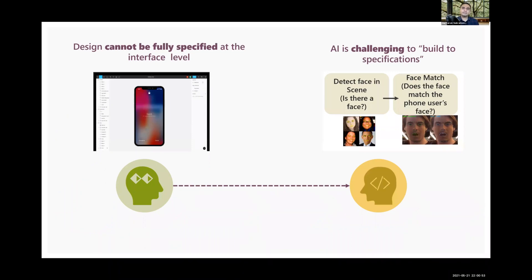Unfortunately, unlike conventional software design, designers cannot fully specify the human-centered AI experience at the user interface level alone. Design extends beyond the interface and into the design of AI subcomponents, including model behavior, implementation, and training data. And because building AI software requires writing meta programs to learn from data, engineers cannot build systems to exact specifications.